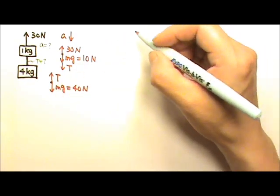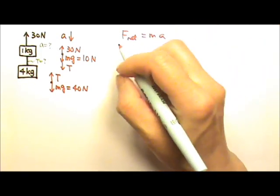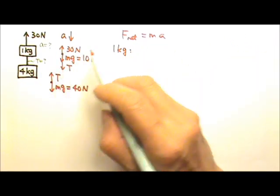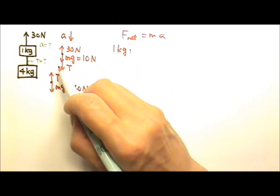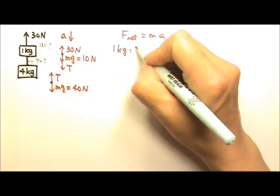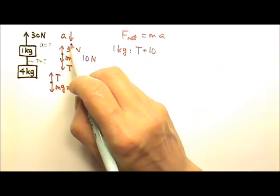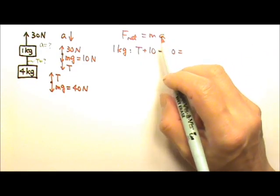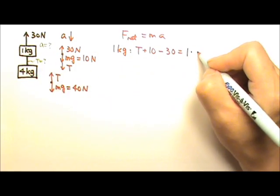Now let's write the force equation: net force equals ma. For the 1 kilogram, the acceleration goes down so the downward forces are bigger. T and 10 newtons work together, so you add them: T plus 10. That's minus the opposite direction force, 30. That equals m times a. Since we're looking at the 1 kilogram, m is 1, and we don't know the acceleration.